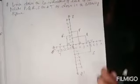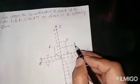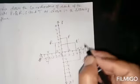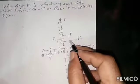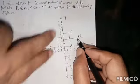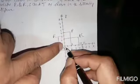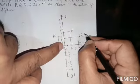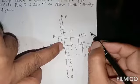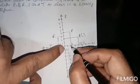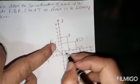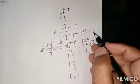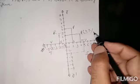Coordinate of point Q: the perpendicular distance from the Y-axis of Q is 4, so we take 4 first. And the perpendicular distance from the X-axis is 2, so the coordinates of point Q are (4, 2).